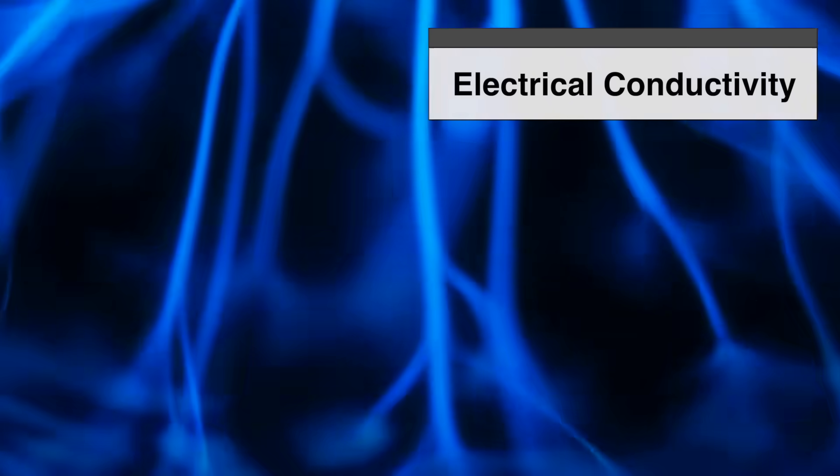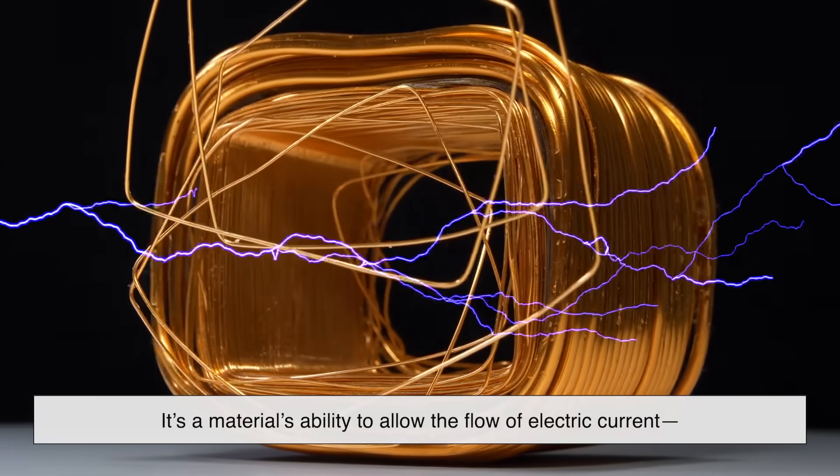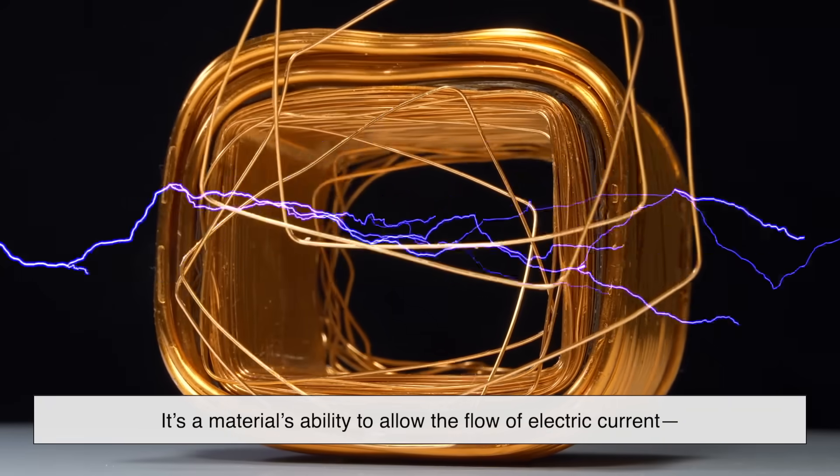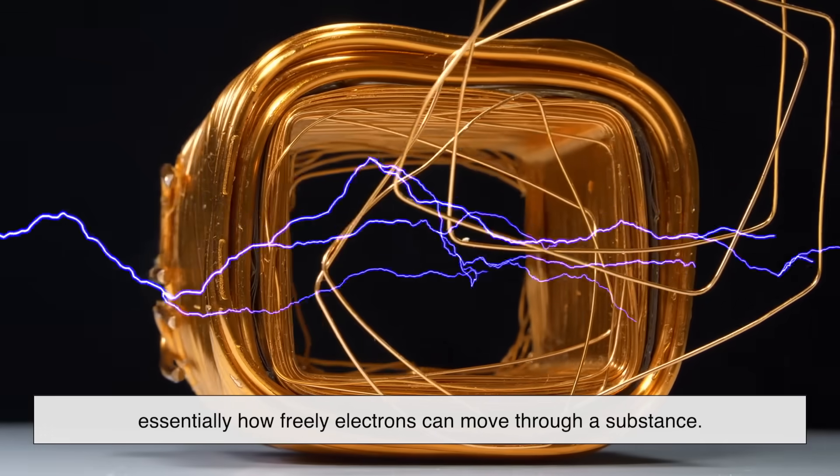Before we talk about why silver and copper are elite conductors, we have to understand what electrical conductivity really means. Simply put, it's a material's ability to allow the flow of electric current, essentially how freely electrons can move through a substance.